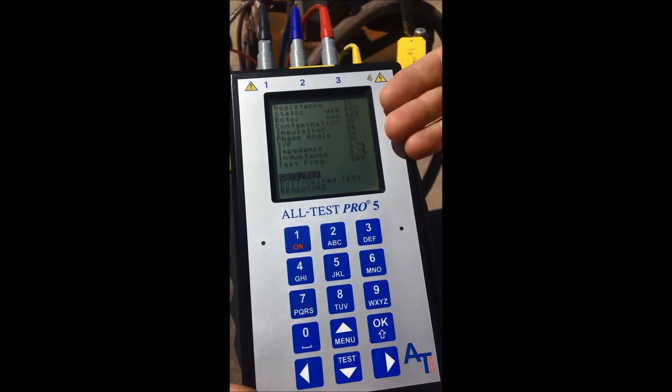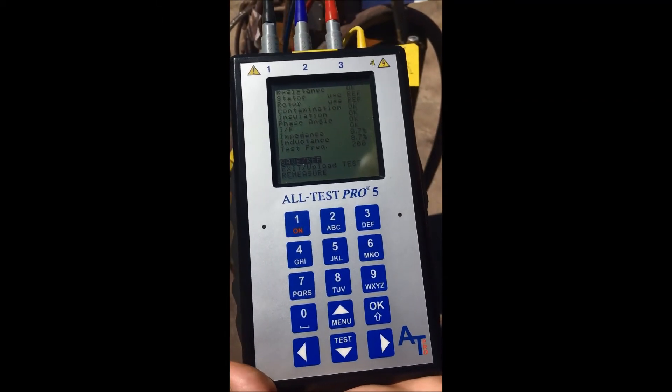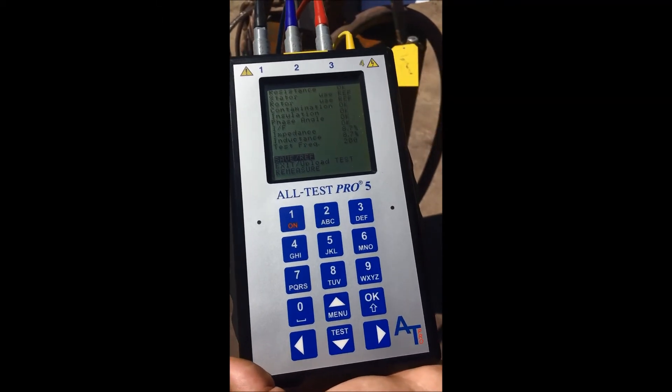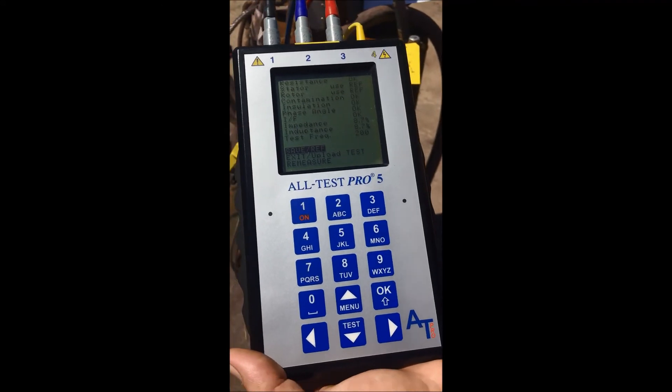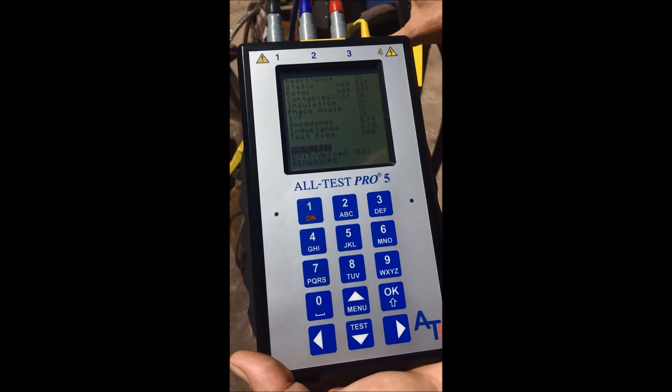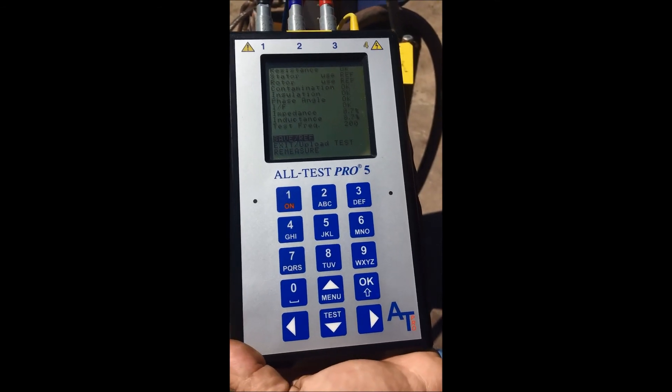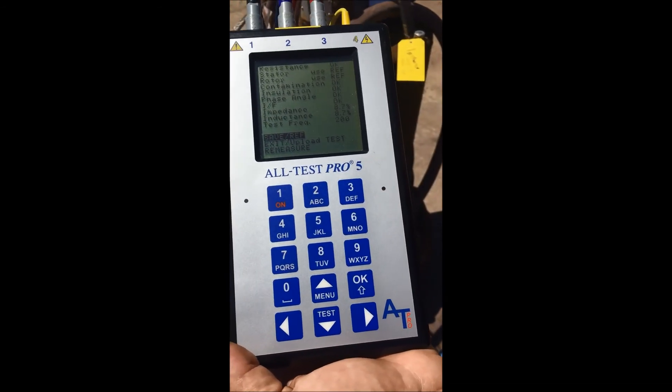So that's how quick it took us about two minutes to run a full test. And we can print this, save it, use it for predictive maintenance at a later date. So we can see how we're trending, how the motor health is trending. That is the quick test with the AT5. Thank you very much.